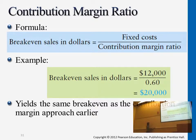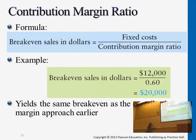For example, 40 over 50 gives you the contribution margin ratio of 0.8, and then you use that to divide the fixed cost of 240 to get to break-even sales.